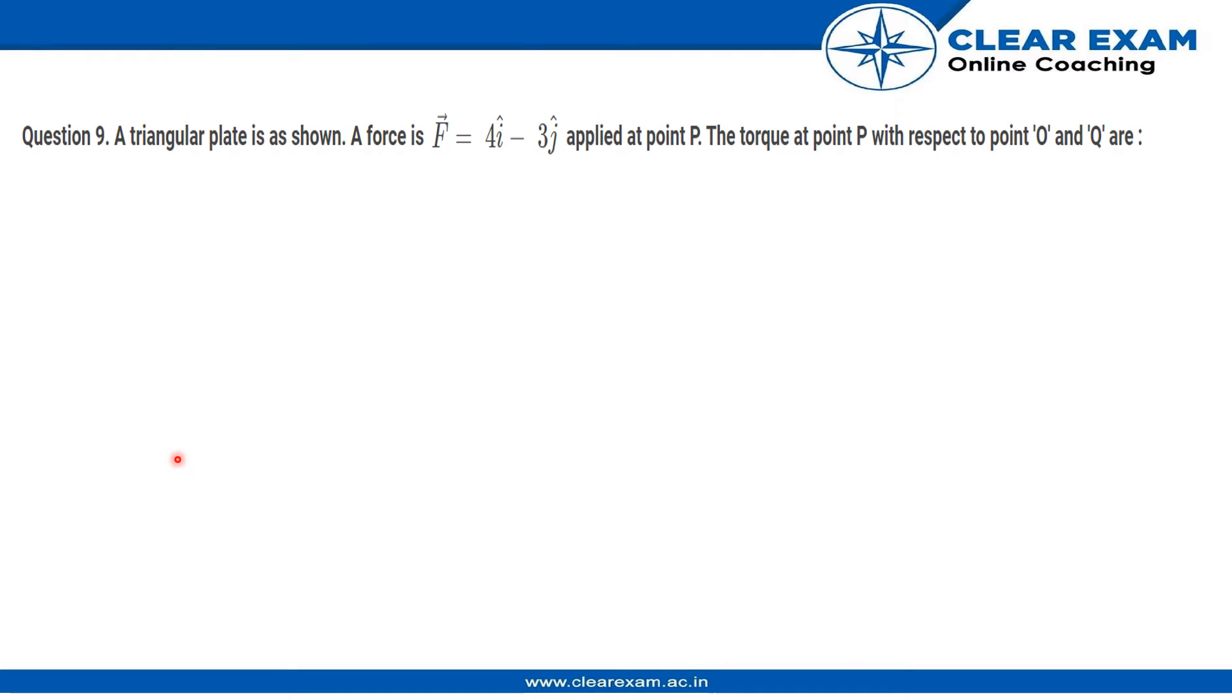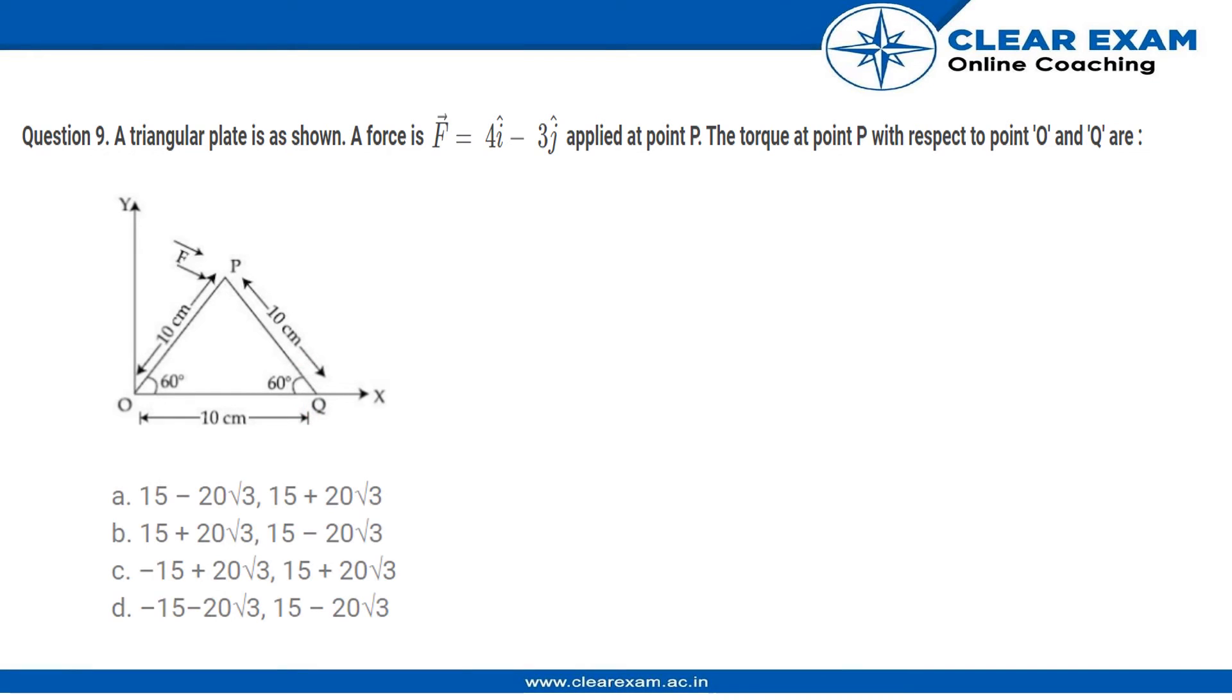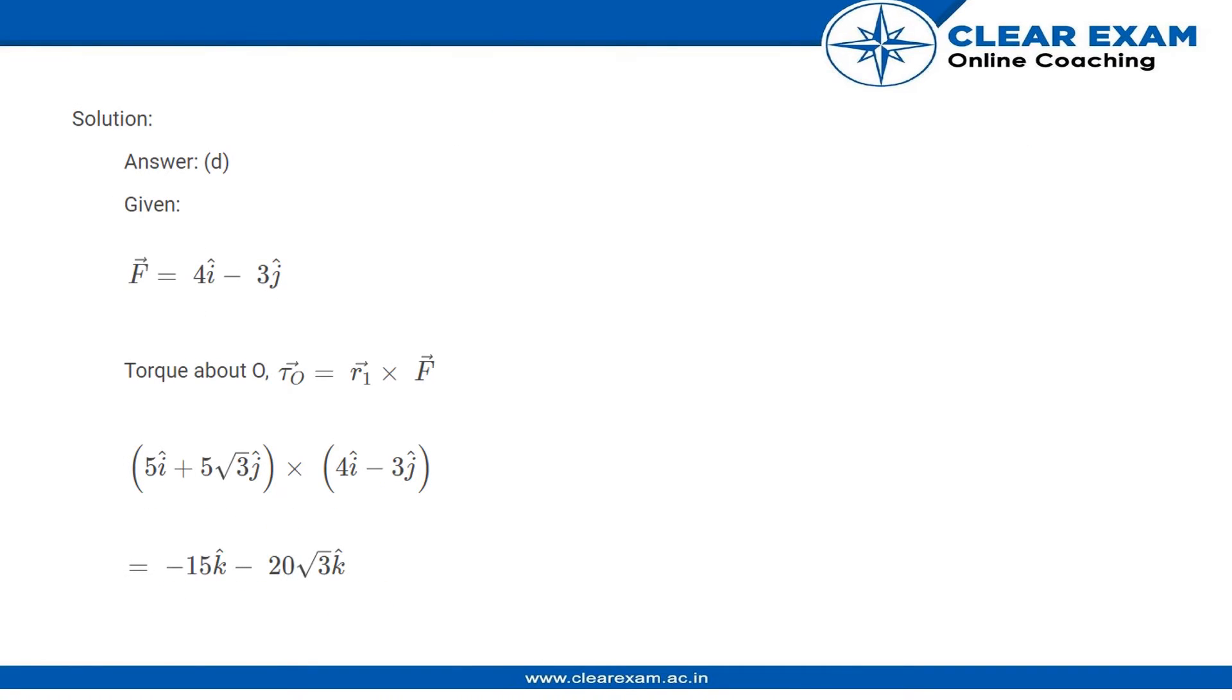The question says a triangular plate is shown with a force F = 4i - 3j applied at point P. Find the torque at point P with respect to points O and Q.